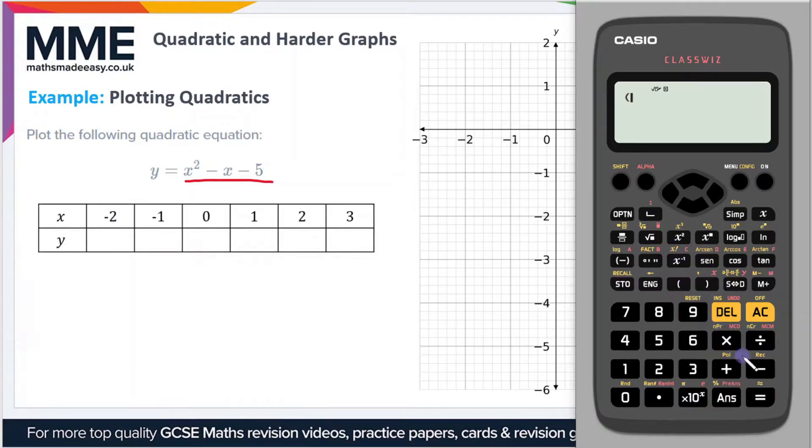So we have, I'll put it in brackets just to make it clear, so minus 2 squared, that's the first value of x, minus, and then we'll put minus 2 inside the brackets, and then we'll put minus 5 on the end. So that gives us our first value of 1, and if we go back to the calculator we can just change this value of minus 2.